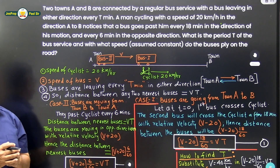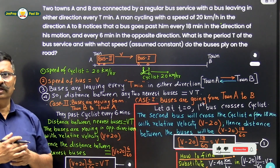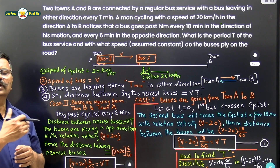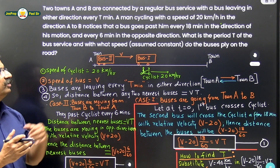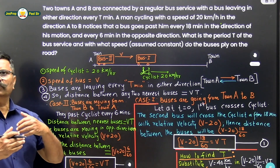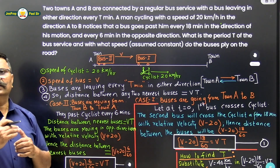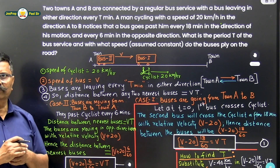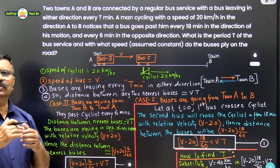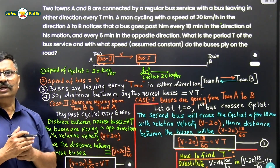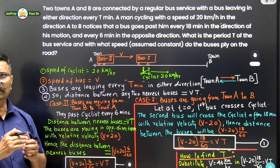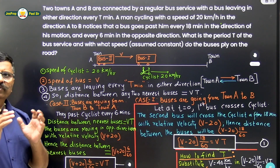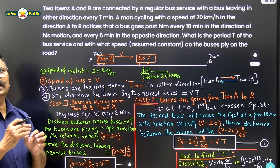Now let us understand the methodology of this problem. There are two towns, town A and town B, and buses ply regularly from town A to town B and town B to town A after equal intervals of time — say capital T minutes. A cyclist starts cycling from town A to town B with a speed of 20 km per hour. This cyclist notices that buses going from A to B cross him every 18 minutes, while buses coming from B to A cross him every 6 minutes. What we want to find is the speed of the buses and the time interval between two buses.